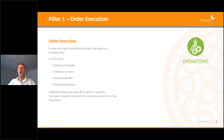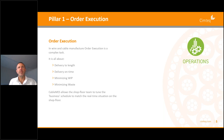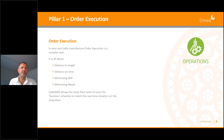Pillar number one: order execution. In wire and cable manufacturing, order execution is a complex task. It's all about delivery to length, delivery on time, minimizing work in progress, and minimizing waste. Cable MES allows a shop floor team to tune the business schedule to match the real-time situation on the shop floor.